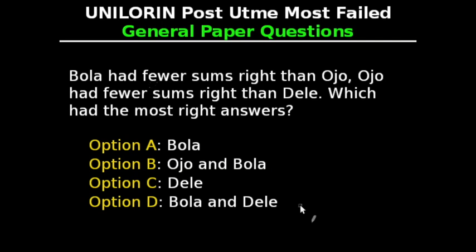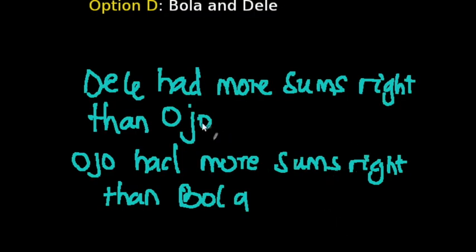From the question, Ojo had fewer sums right than Dele, meaning Dele had more sums right than Ojo. Also, Bola had fewer sums right than Ojo, meaning Ojo had more sums right than Bola. So Dele had more sums right than both Ojo and Bola.